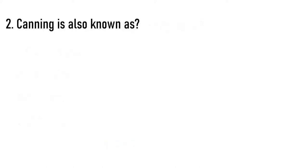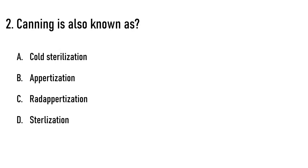Next question: Canning is also known as dash. Options are A) cold sterilization, B) appetization, C) rad appetization, D) sterilization. The correct answer is appetization. This name comes from Nicholas Appert, who is known as the father of Canning.